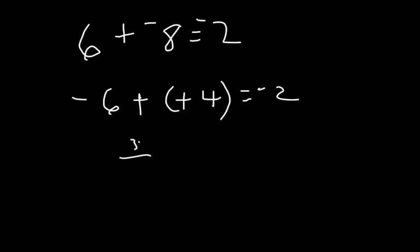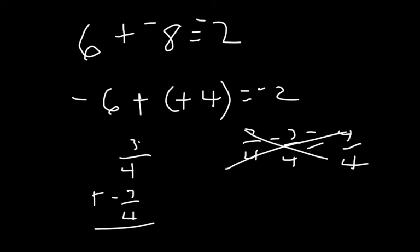If you have 3 fourths minus 7 fourths, you would say, what's the difference between 7 fourths and 3 fourths? And that would be 4 fourths. But I should have made it add negative 7 fourths. So, let me just rewrite that: 3 fourths plus negative 7 fourths. So, you do 7 minus 3 and you get 4. And there's 4 fourths. There's more negatives than positives. So, the answer is negative 4 fourths, which is the same as negative 1. So, that's how you can apply this with fractions.